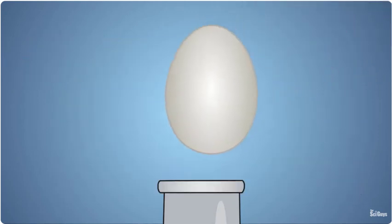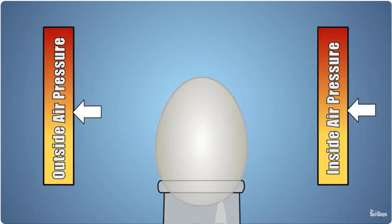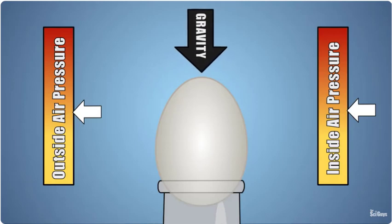Normally, when you place an egg on top of the bottle, it won't fit through the bottle's opening, because the egg's diameter is larger than the opening of the bottle. Since the pressure inside and outside of the bottle are the same, the only force that pushes the egg into the bottle is gravity. But gravity isn't strong enough.